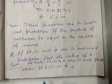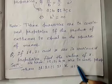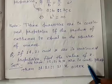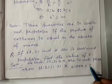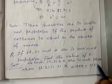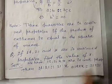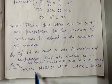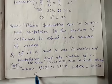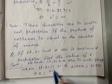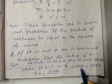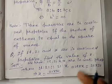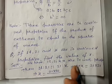This means product of extremes (14 × x) is equal to product of means (21 × 21), that is 21². So 14x = 21 × 21. यहां से x की value निकलेगी। x = (21 × 21) / 14.